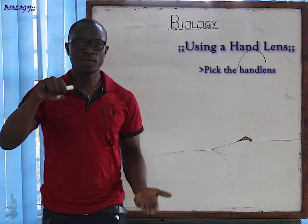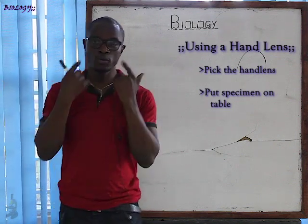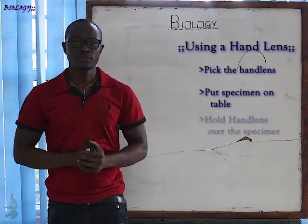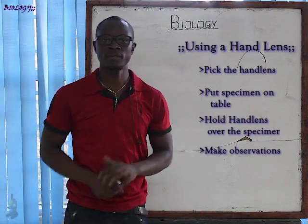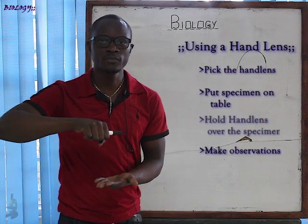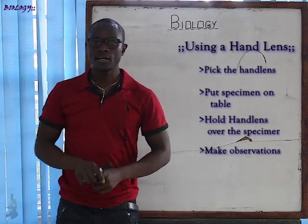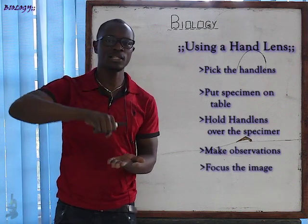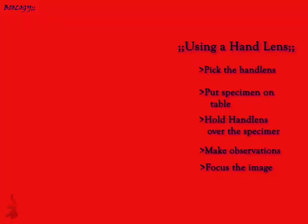After holding the hand lens with one hand, take the specimen and place it on the table. Then take the hand lens and place it above the specimen. Come closer and observe the specimen through the lens — you are observing the specimen but it is magnified. The last step: move the hand lens up or down so that the image you see through the hand lens becomes clear.